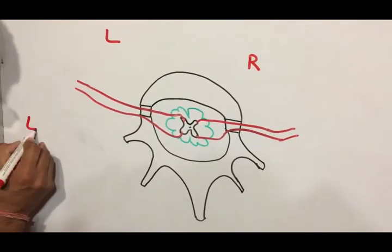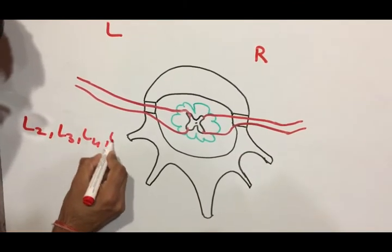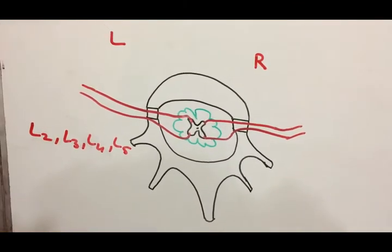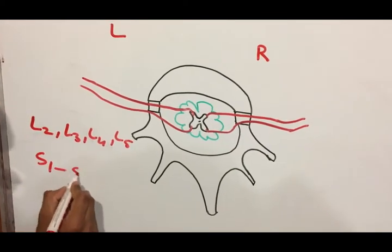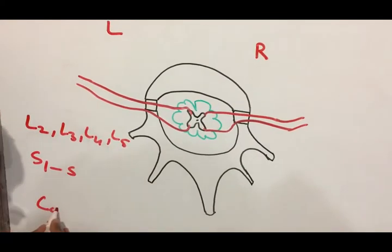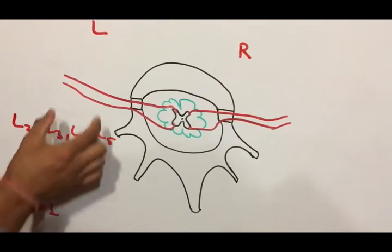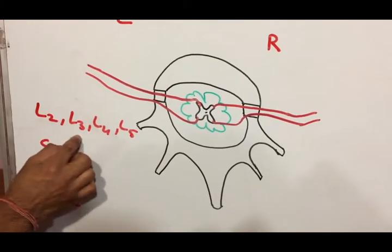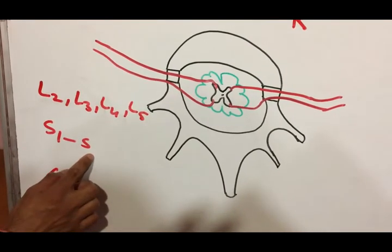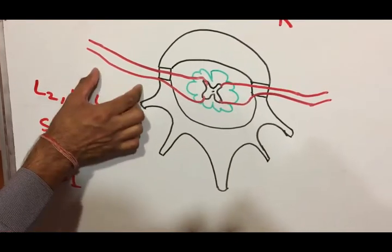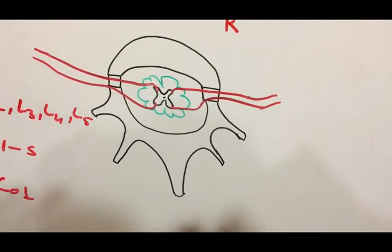The nerve roots numbered lumbar 2, 3, 4, and 5, sacral 1, 2, 3, 4, and 5, and coccygeal 1 — these nerve roots come out from below lumbar 3 or 4 and travel down within the vertebral canal.